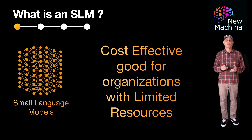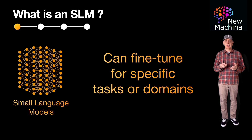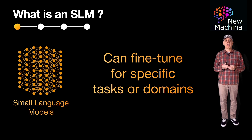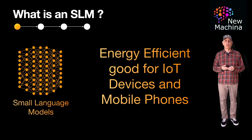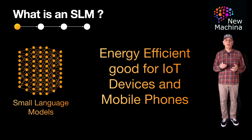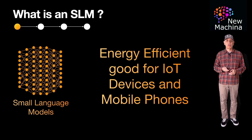Small language models fit well with task-specific training. They can be fine-tuned for specific tasks or domains, allowing them to perform well in niche areas despite their smaller size. Small language models also offer energy efficiency — the reduced computational demands result in lower energy consumption, making them suitable for deployment on edge devices or mobile phones.